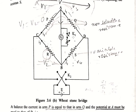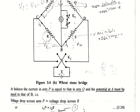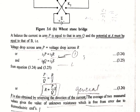At bridge balance, the potential difference across P equals that across R, and the potential across Q equals that across S. The current in arm CA equals that in AD, and current in arm CB equals that in BD, since no current flows through the galvanometer. So at balance: I₁P = I₂R and I₁Q = I₂S. Dividing these two equations gives P/Q = R/S, so the unknown resistance R = (P/Q) × S.